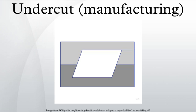In molding it refers to a feature that cannot be molded using only a single pull mold. In printed circuit board construction it refers to the portion of the copper that is etched away under the photoresist. In welding it refers to undesired melting and removal of metal near the weld bead.